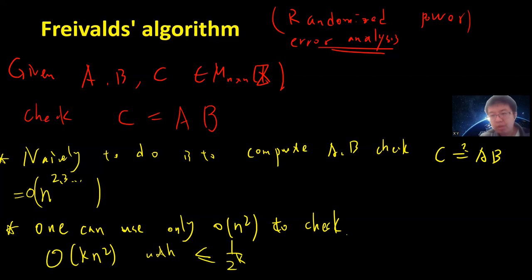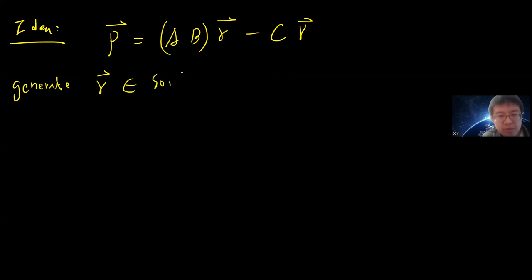The idea is very simple. In order to do this, you just define P to be a vector, P equals (AB)r minus Cr. You are not computing AB directly, you just write this. And you generate r to be a zero-one vector, an n-dimensional column vector with entries 0 or 1. So r is random. For example, r may look like maybe 0, 1, 0, 1, 1, 1, 0. So all you need to do is just compute P.